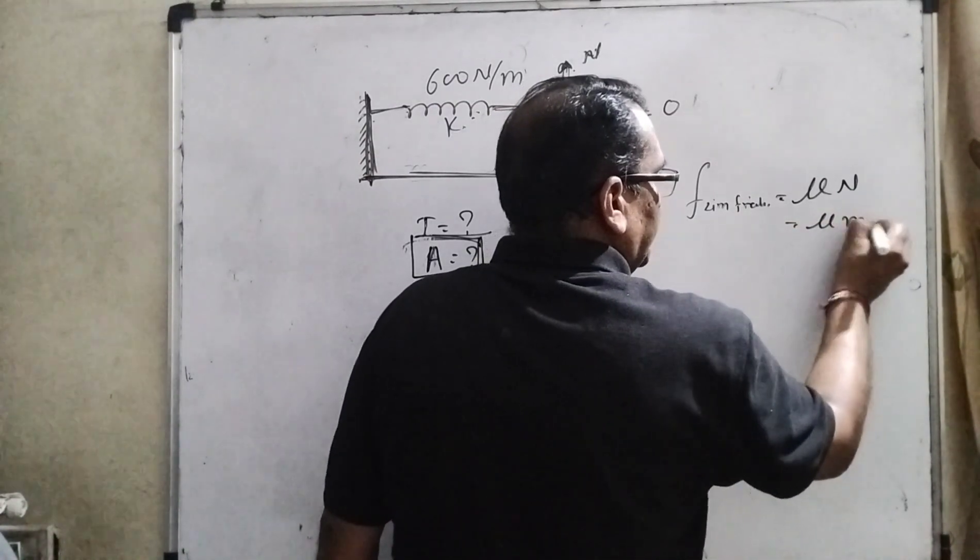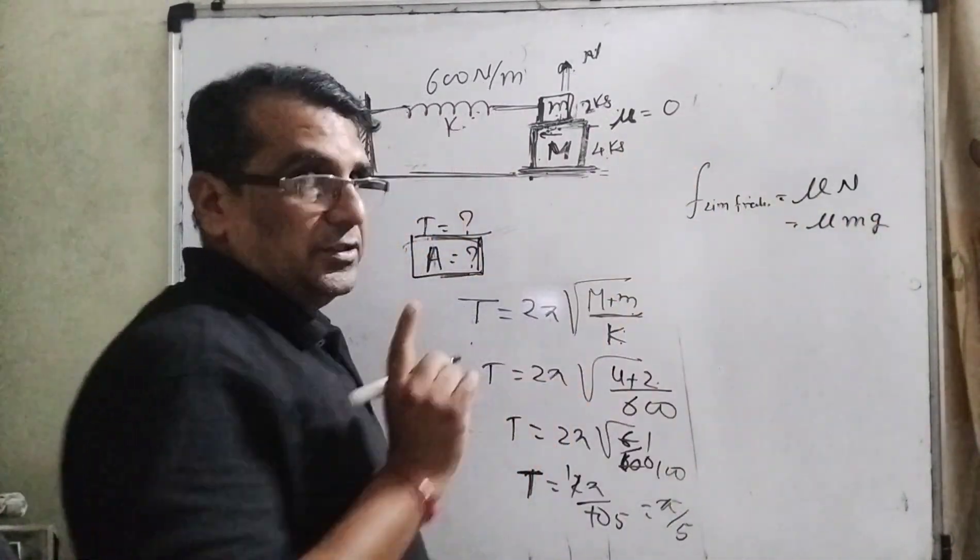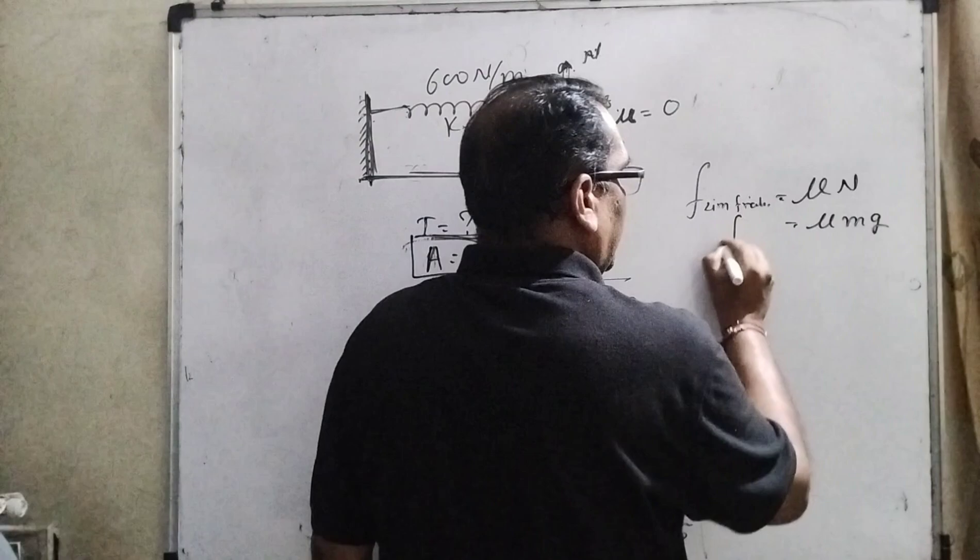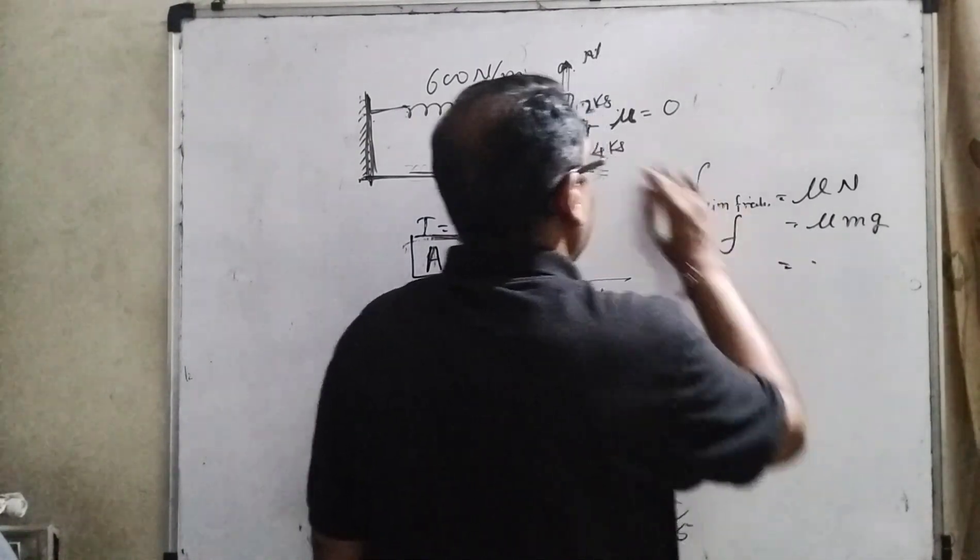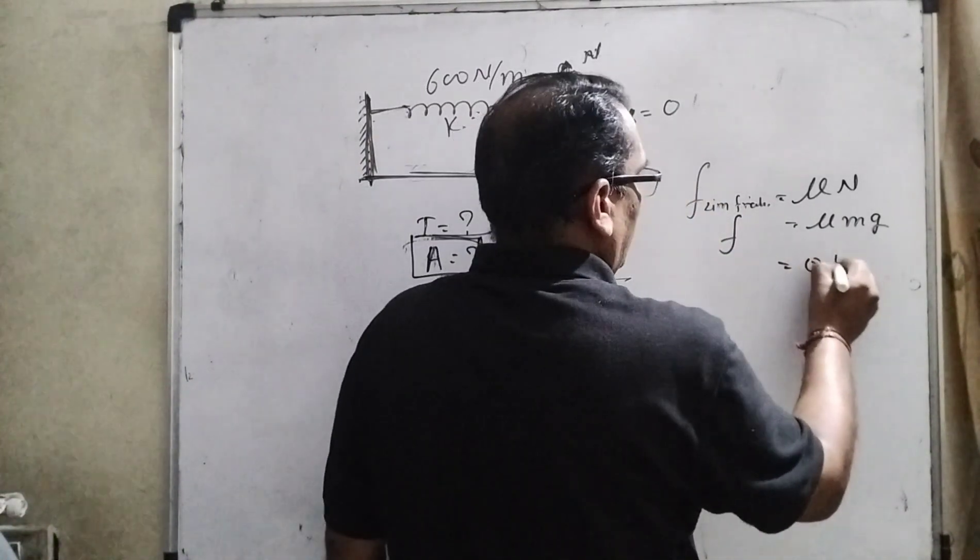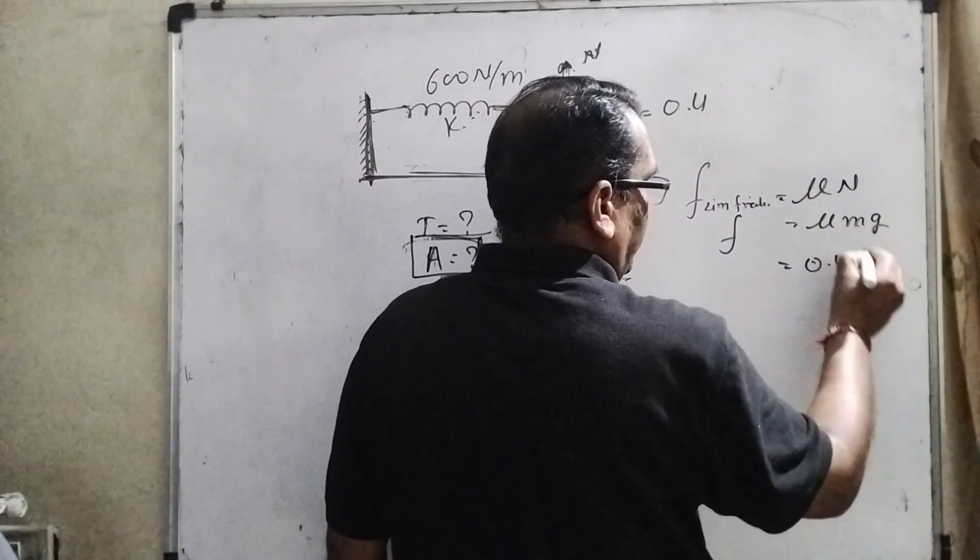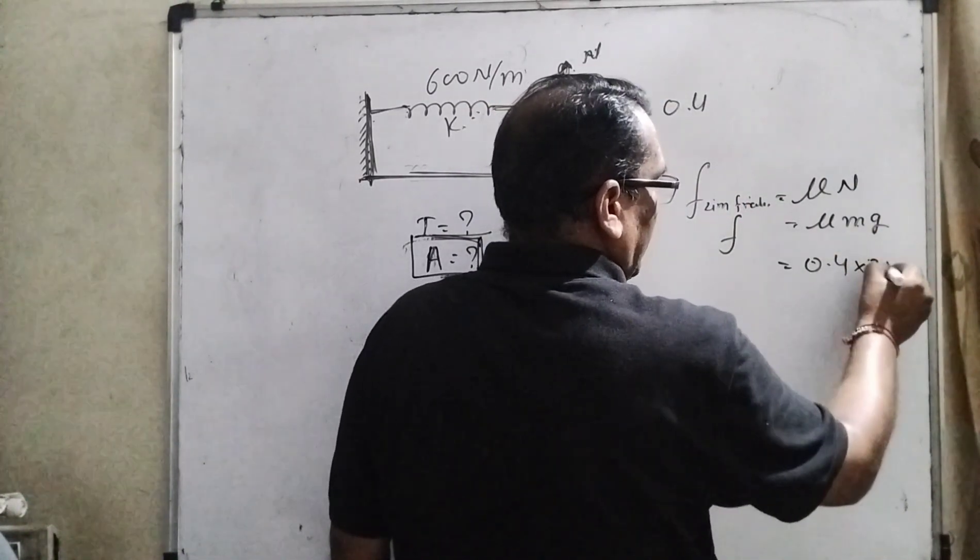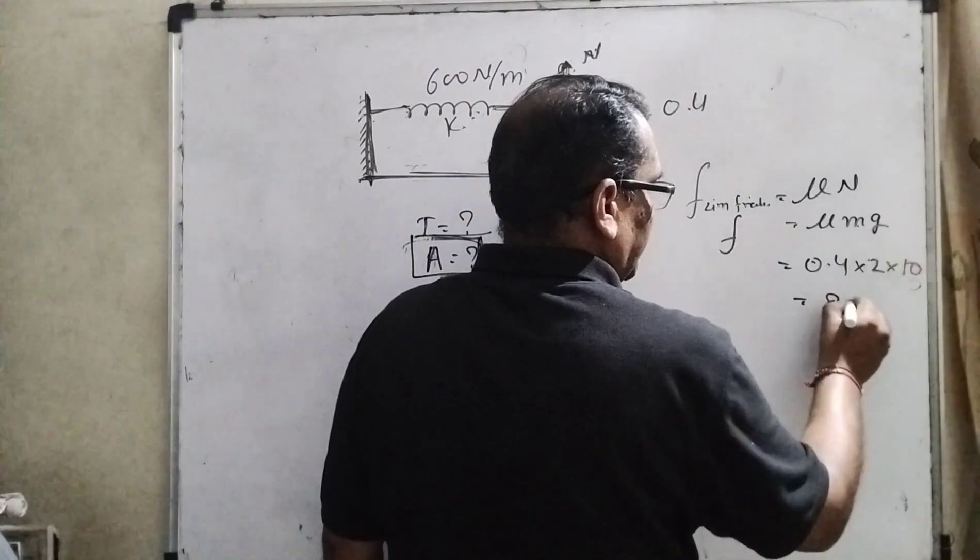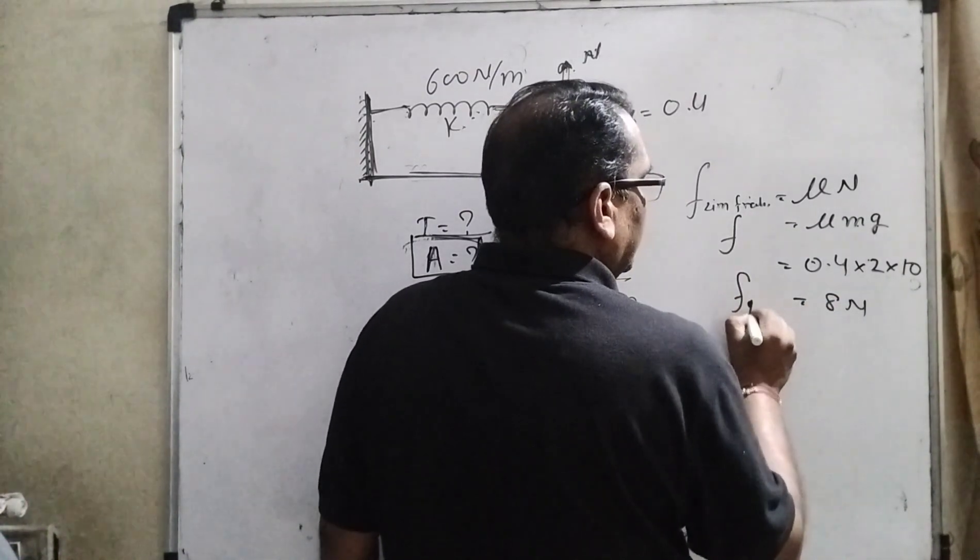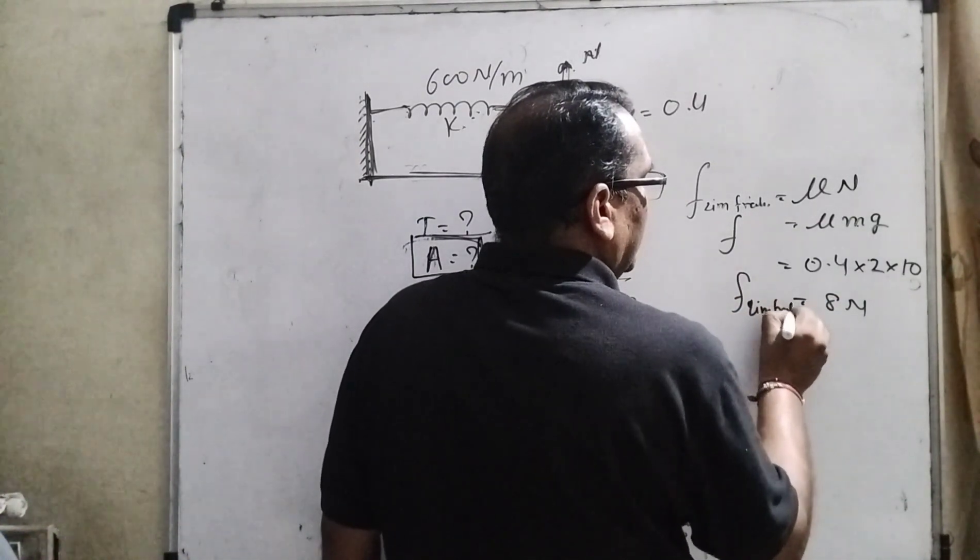N equals mg (small mg). This is very important. So here the frictional force: mu is 0.4, m is 2, and g is 10, which equals 8 Newton. This is the limiting friction.